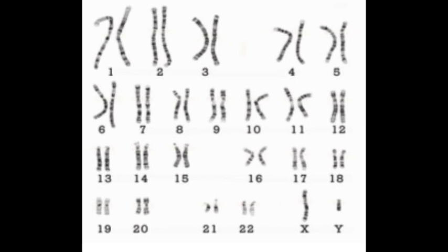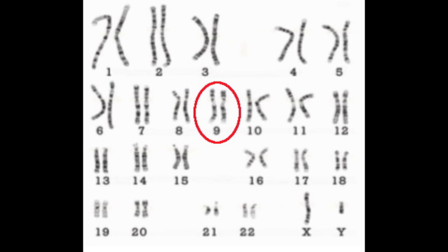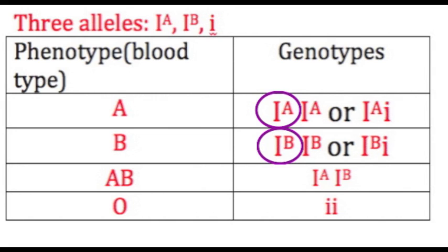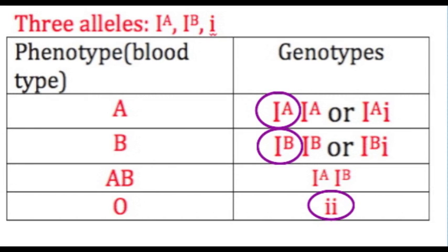The ABO blood typing system we know is controlled by a single gene on chromosome number 9. This particular gene has three different allele possibilities. Alleles A and B are codominant, while the allele for O is recessive.